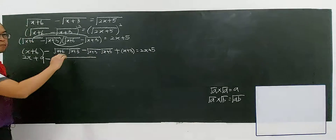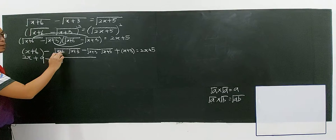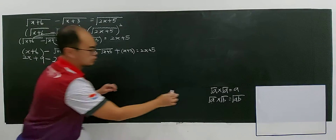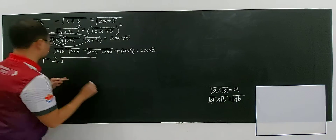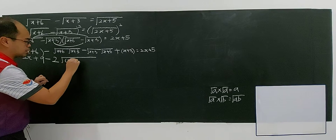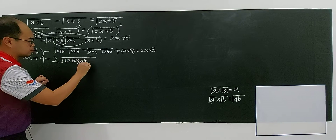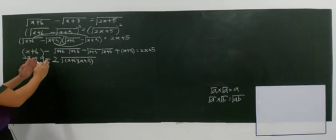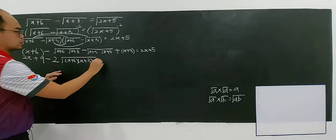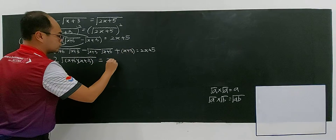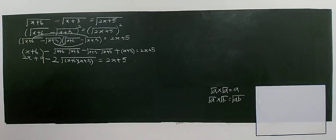I combine them because square root of a times square root of b, where a and b are different, gives √(ab). So it becomes negative 2 times square root of (x+6)(x+3), equal to the right hand side, 2x plus 5.